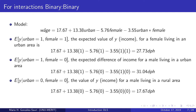For a male living in an urban area, the expected income is given by 17.67 plus 13.38, because the male is living in an urban area and the other terms cancel out given that the female variable takes a value of zero for a male.